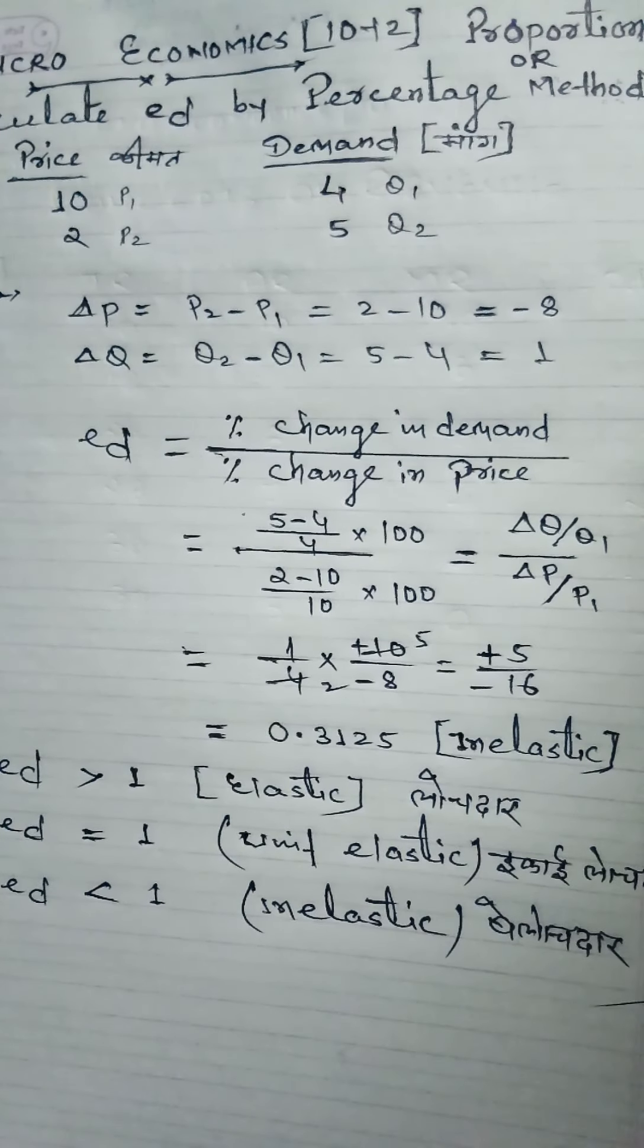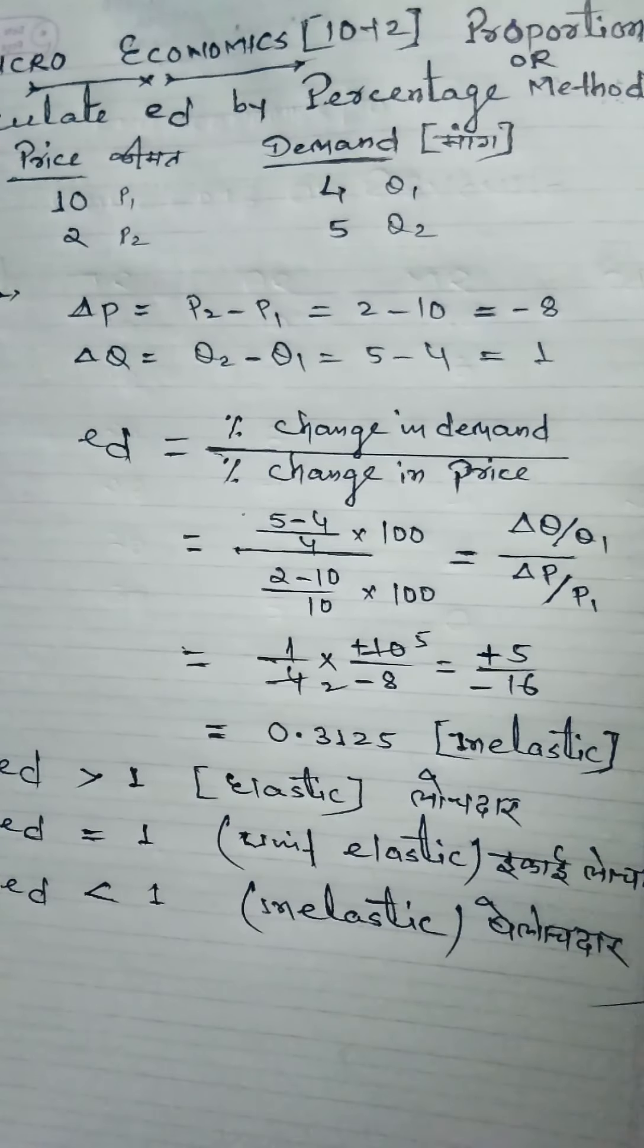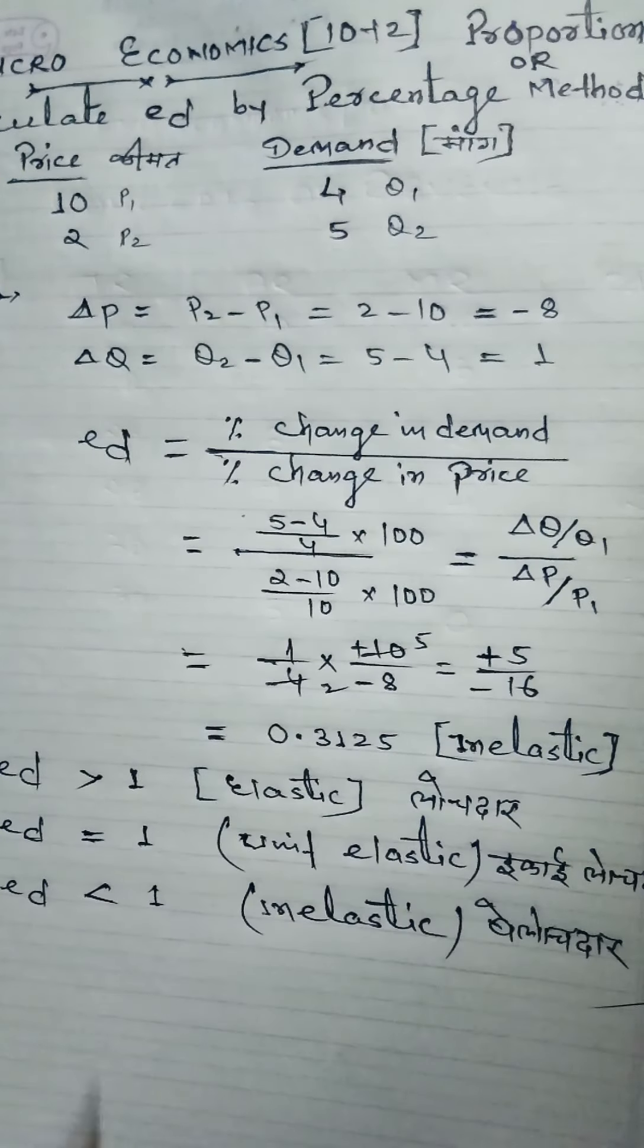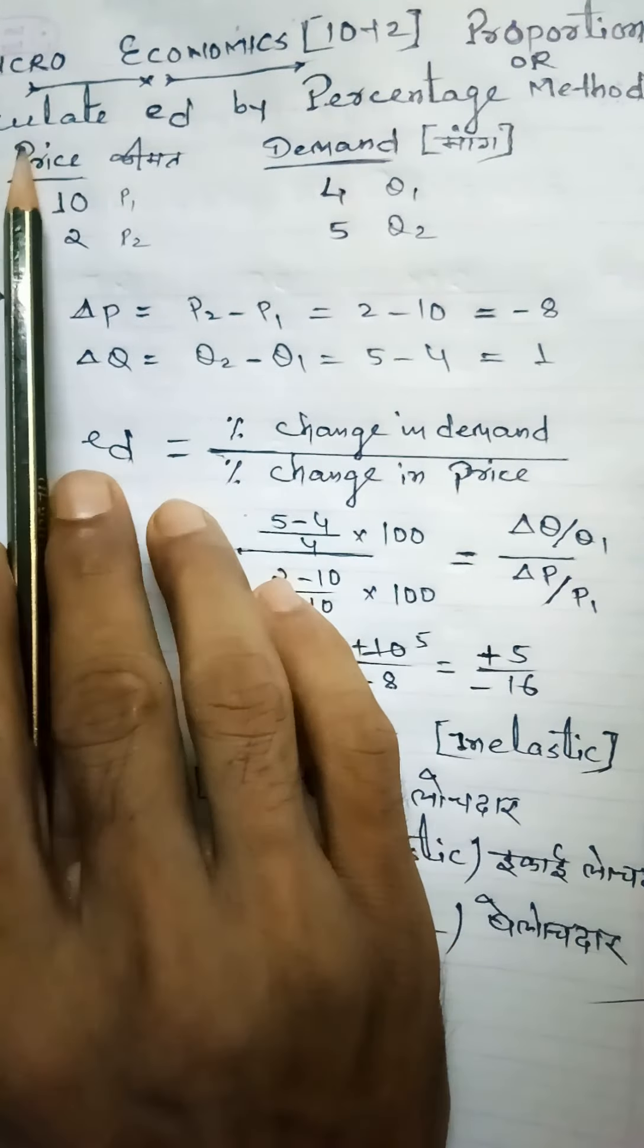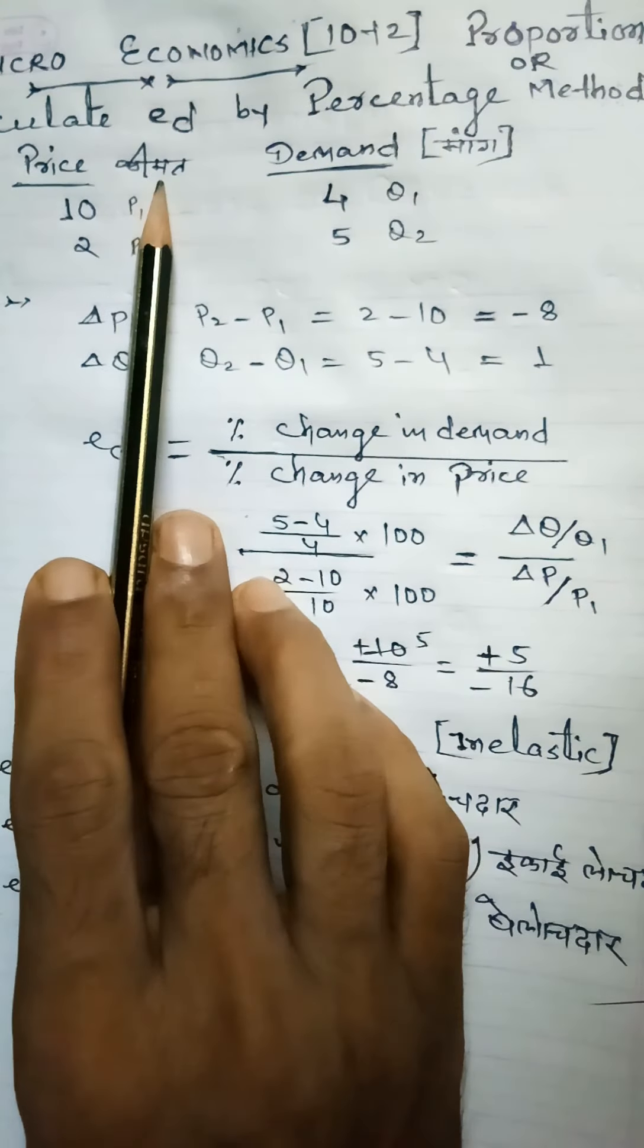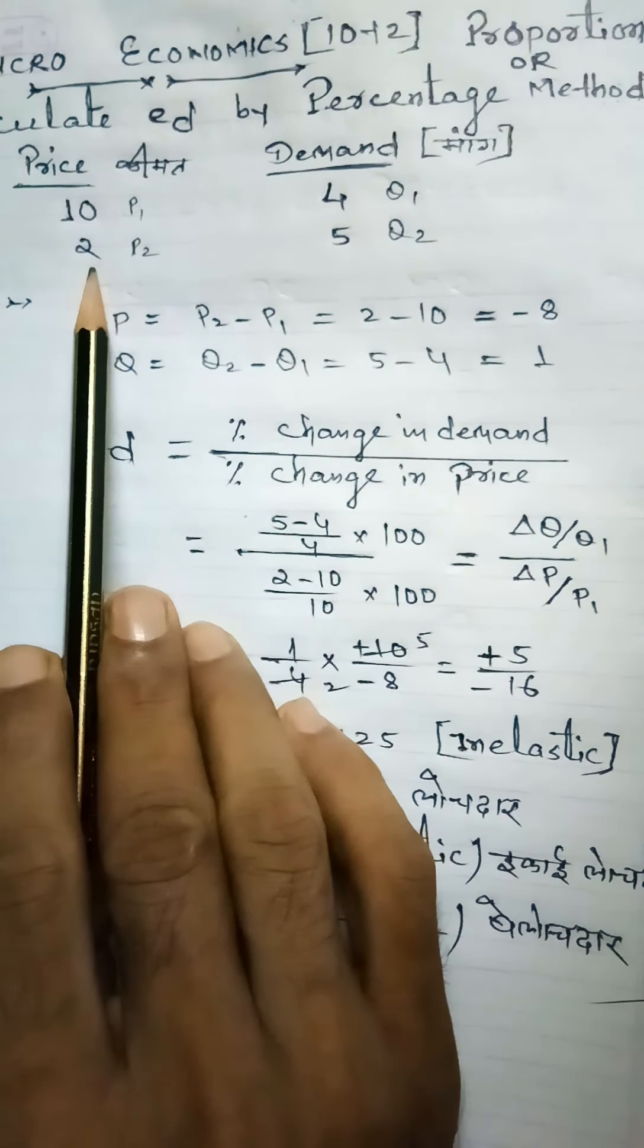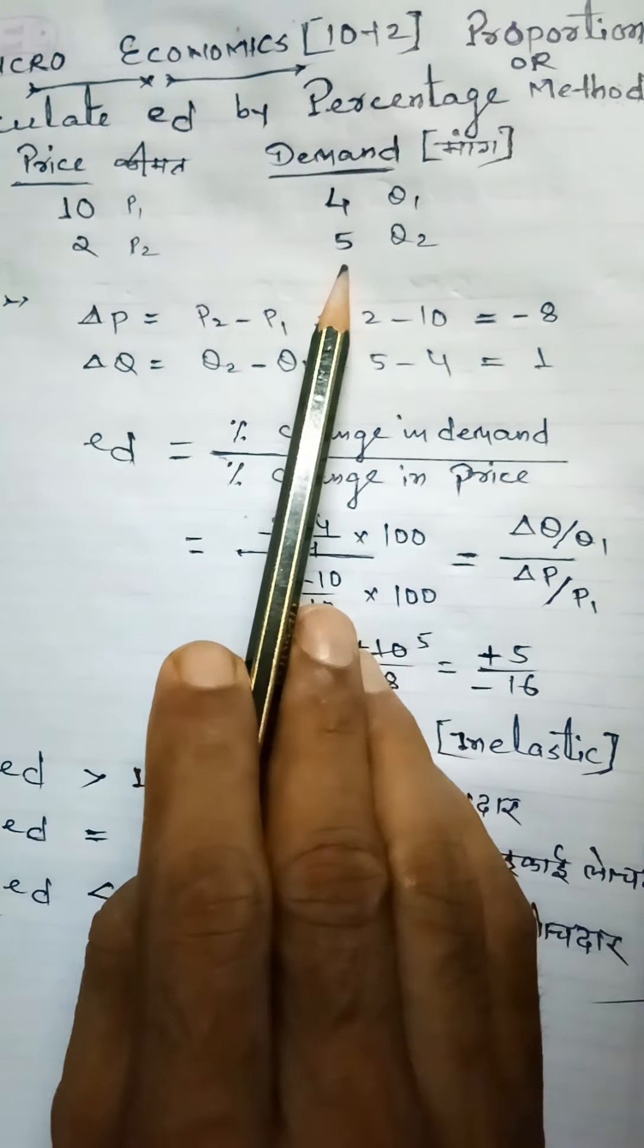In this video, we will learn how to solve these kinds of sums. I have a sum for students: Calculate the elasticity of demand by percentage method and proportionate method, where price P1 is 10, P2 is 2, and demand Q1 is 4, Q2 is 5.